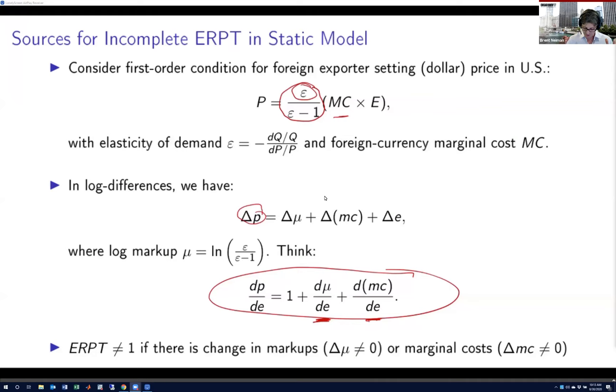So if there's no change in markups, no change in marginal costs in a static, flexible price world, you'll have pass-through equal to one. Incomplete pass-through, again, when we have a flexible prices static setting, can be attributed to this change in marginal cost or change in the markup co-moving with the exchange rate.